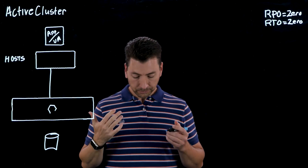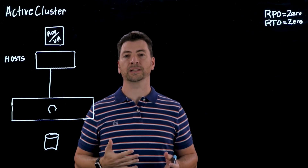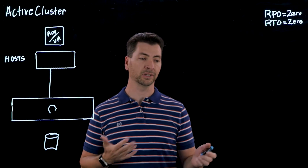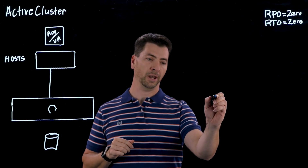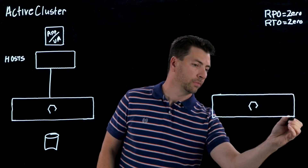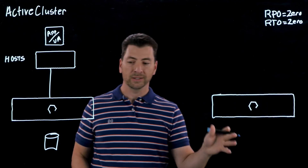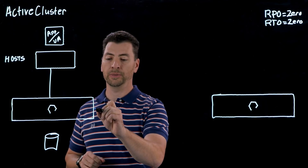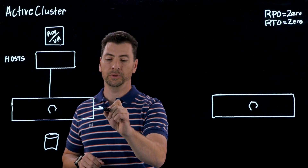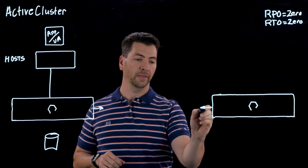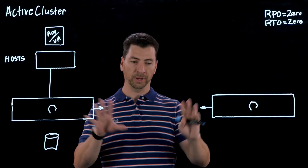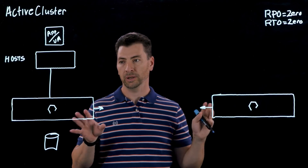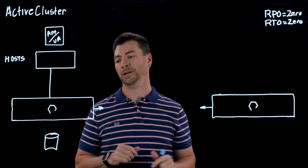The first thing we do in an Active Cluster environment is to add a second array to the configuration. We've got a second array in the environment, and then these arrays are going to be connected together with a replication interconnect — that works bi-directionally. So the arrays are both connected and we can replicate data in either direction.